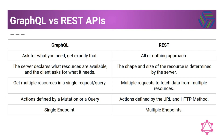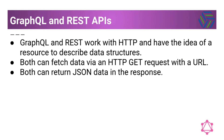In REST you can leverage the HTTP specification for caching using URLs as the unique identifier of a resource. Now let's see some common characteristics between GraphQL and REST APIs. GraphQL and REST work with HTTP and have the idea of a resource to describe data structures. Also, both can fetch data via an HTTP GET request with a URL and both can return JSON data in the response.